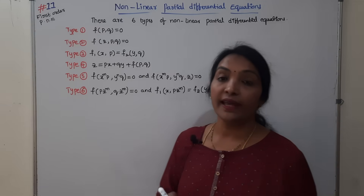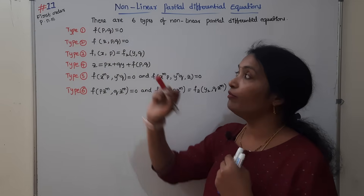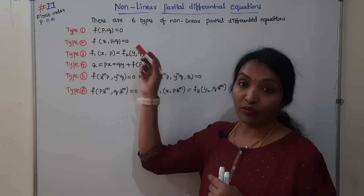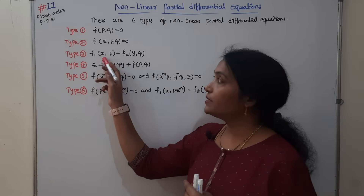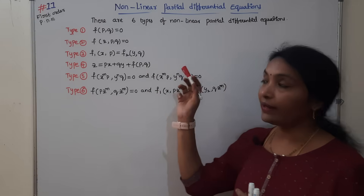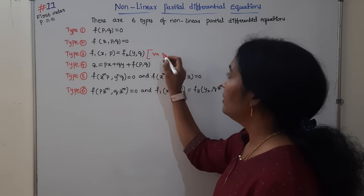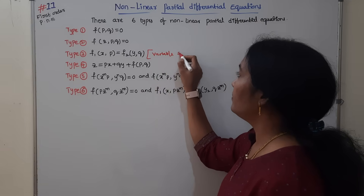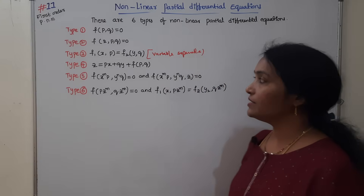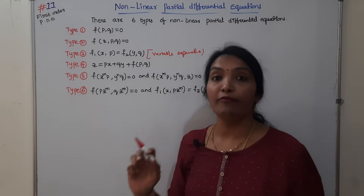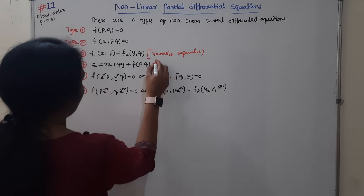The first type: if the function is in terms of p and q only, then go for Type 1. If it involves z, p, q, go for Type 2. If it involves xp or yq, go for Type 3. The fourth type involves z, px, qy, f of p and q — this is Charpit's Equation, very very important.